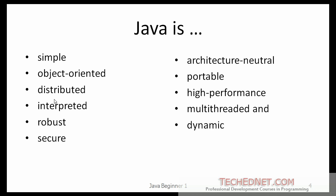When Java was first released, its developers wrote a white paper justifying a new programming language — why do we need to learn a new programming language? In that white paper, they describe Java as simple, object-oriented, distributed, interpreted, robust, secure, architecture-neutral, portable, high-performance, multi-threaded, and dynamic. Let me go through some of these qualifiers and give you my opinion on to what extent they correctly describe the programming language.